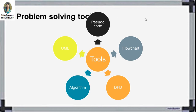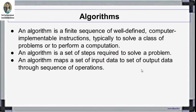Next are the problem solving tools. Which tools can you use? You can use pseudocode, flowchart, DFG, algorithm, UML — all these are different tools and you can use any one of them. We will learn all these tools step by step. The first one is the algorithm. What is an algorithm actually?